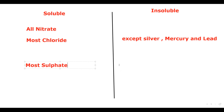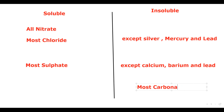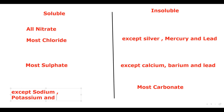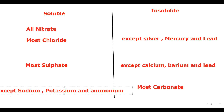Most sulfates — salts having SO4 — are also soluble, except three: calcium sulfate, barium sulfate, and lead sulfate. Most carbonates — salts having CO3 — are insoluble, except three: sodium carbonate, potassium carbonate, and ammonium carbonate (NH4)2CO3. These three carbonate salts dissolve in water.